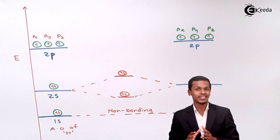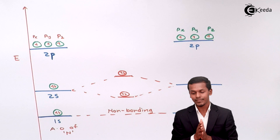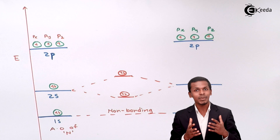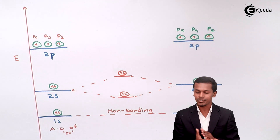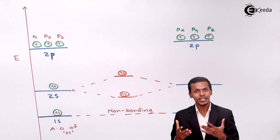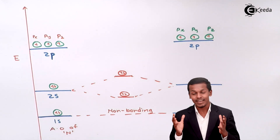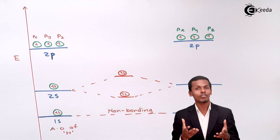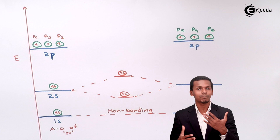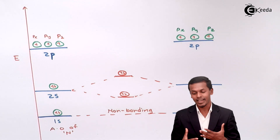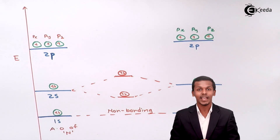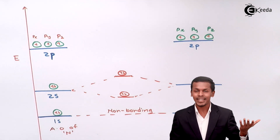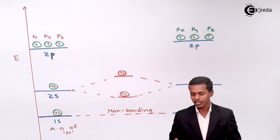Now talking about the 2p orbital, this is very different compared to what we have learned earlier for boron and carbon. When it comes to boron, carbon and nitrogen, the 2px and 2py orbitals are responsible for forming the molecular orbital diagram. During molecular orbital formation, the 2px and 2py are at a lower energy level, while the 2pz is at a higher energy level. That is what we have represented for boron and carbon as well.